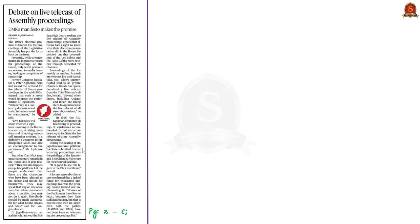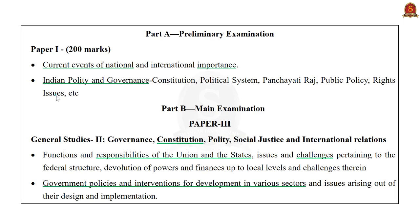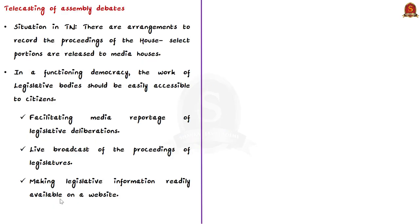The next news article is about telecasting live the state legislative assembly proceedings. With elections due in Tamil Nadu and West Bengal, a popular political party in Tamil Nadu has made an electoral promise to telecast live the proceedings of the state legislative assembly. This has brought the issue of live telecasting of assembly debates back into the limelight. In 2019, the then speaker of Karnataka Vidhan Sabha had restricted television cameras from videographing assembly proceedings, leading to protests by political parties and media persons.